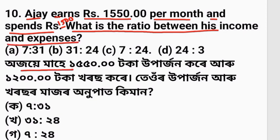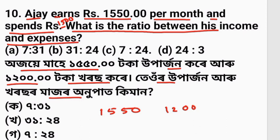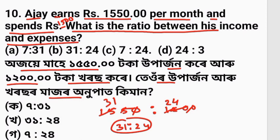Ojoe earns a certain amount per month and spends a certain amount. To find the ratio between his income and expenses, we set up the ratio of income to expenditure. Simplifying the ratio of 1550 to 1500 gives us 31 is to 30 as the answer.